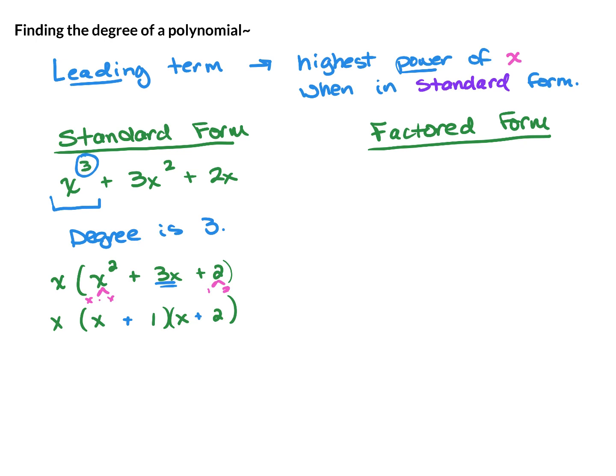To check our work, you can multiply it back out: x squared plus 1x plus 2x plus 2. And that indeed does check with our original polynomial. So the factored form is going to be x, parenthesis, x plus 1, parenthesis, x plus 2.